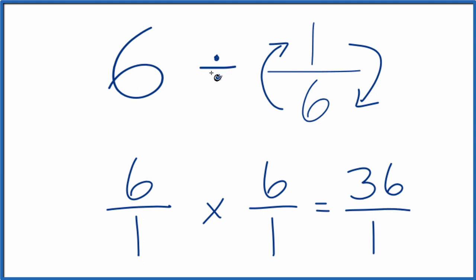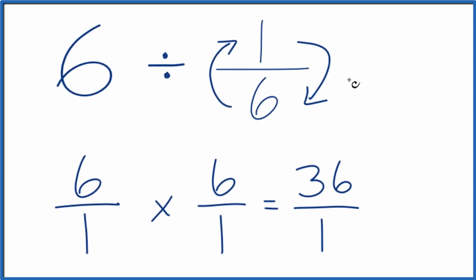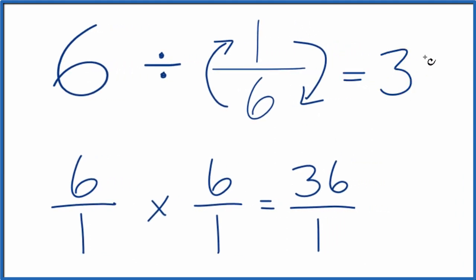So in answer to our question, when we divide 6 by 1/6, we get 36. If you multiply 36 by 1/6, you'll get 6.